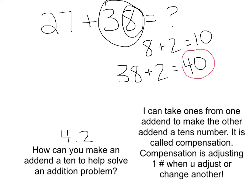Next, take that many ones away from the other addend. Remember, we took two. So now we're going to take 27 minus 2, which gives us 25.